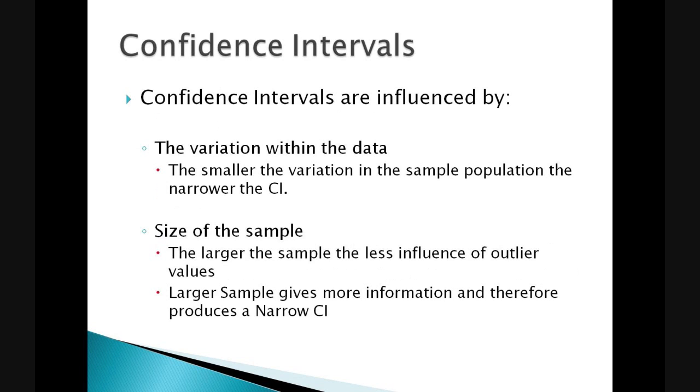Confidence intervals may be influenced by two factors. The variation within the data, i.e. the smaller the variation in the sample population, the narrower we know the confidence intervals will be because there is less likely to be a great variation within the whole population. The size of the sample also influences our confidence intervals. The larger the sample size, the less influence outlier factors have on the mean value. Therefore a larger sample gives more information and produces a narrower confidence interval.